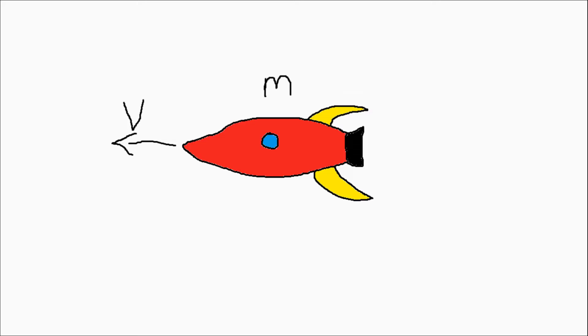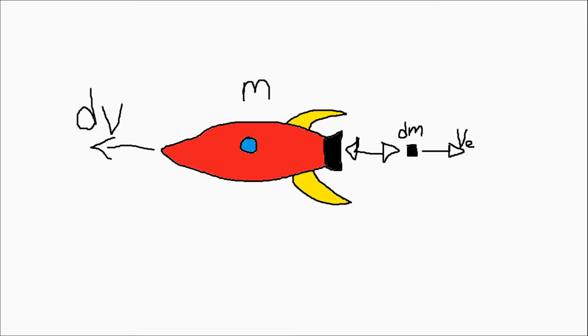Since the rocket is moving and it also has a mass, we know that it has momentum, since momentum is just mass times velocity. Now, as the rocket continues to burn fuel, it gains velocity and loses mass. This fuel also has its own momentum, moving in the opposite direction of the rocket.